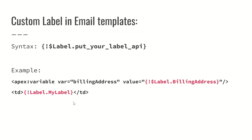You can also use custom labels in email templates with the syntax $Label.labelName — for example, $Label.billingAddress — and it will retrieve the value of that custom label.